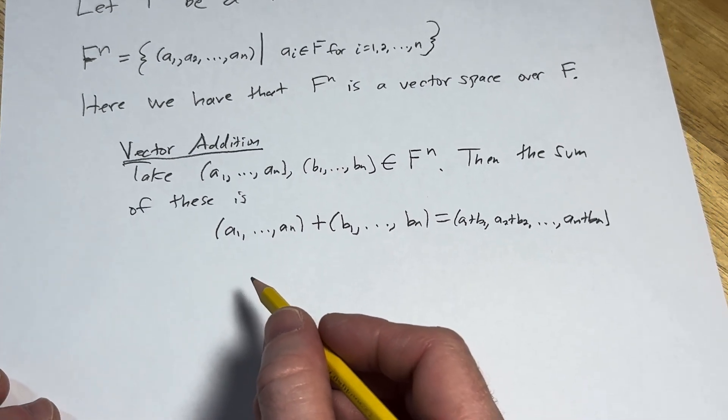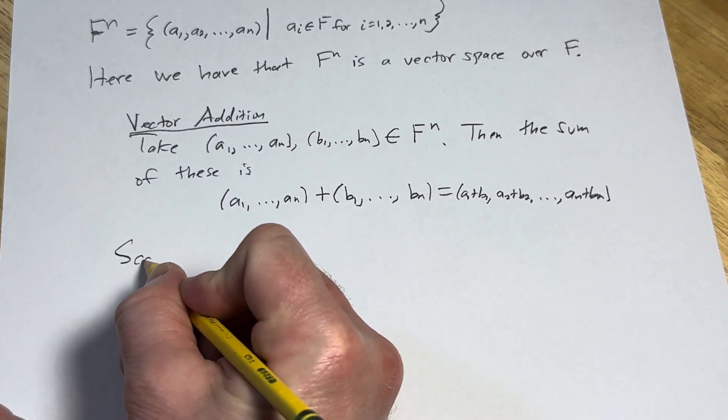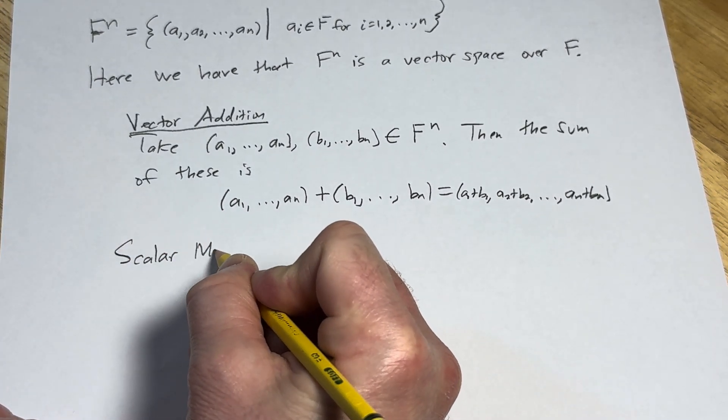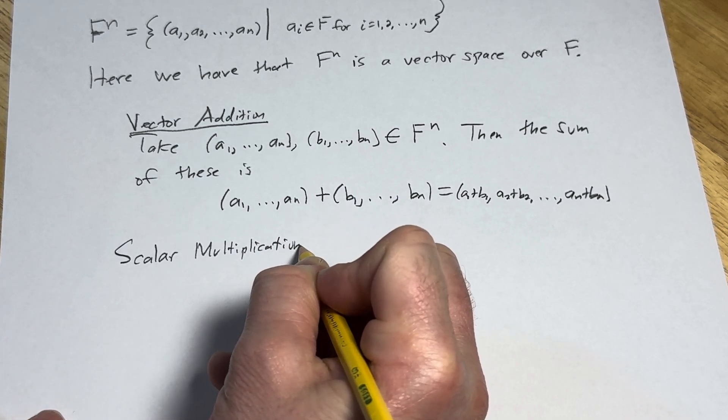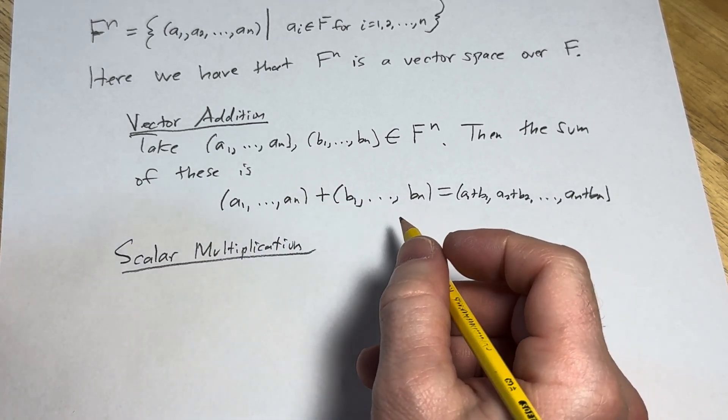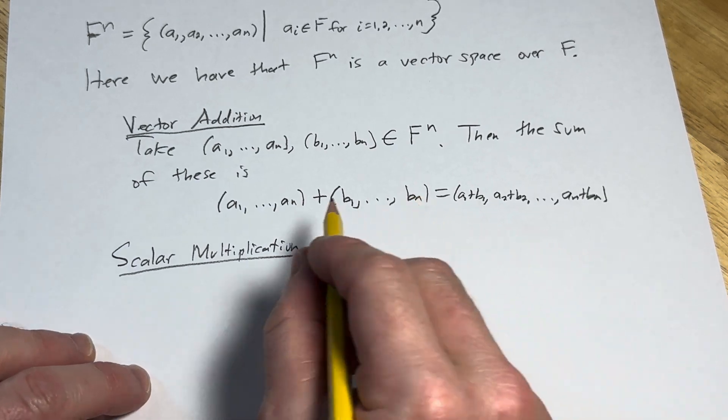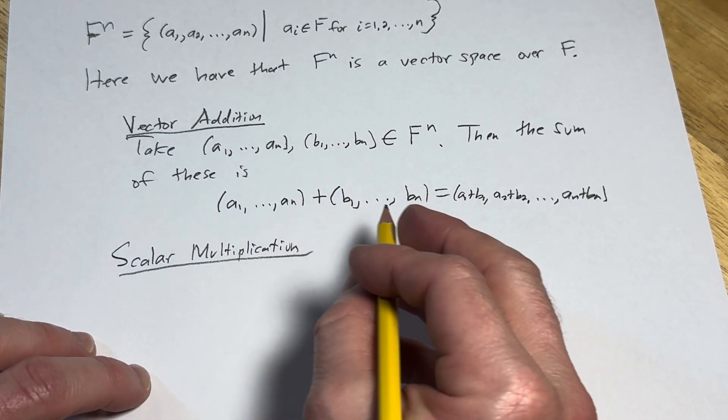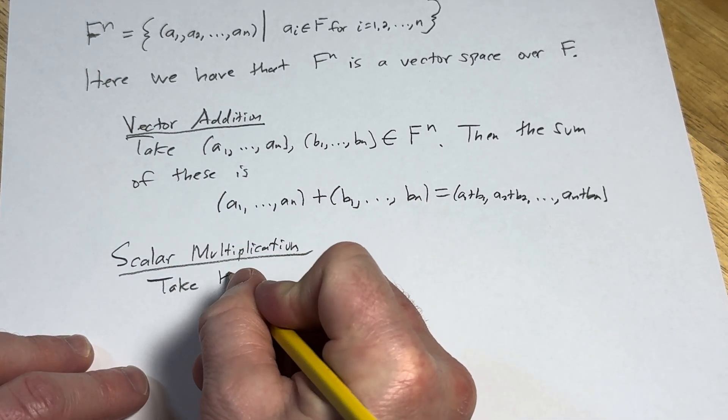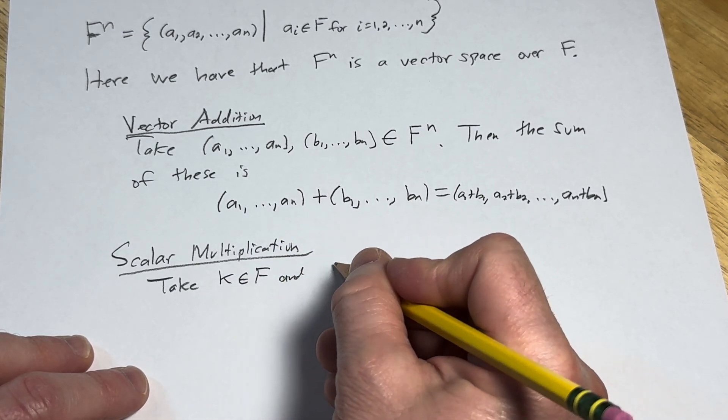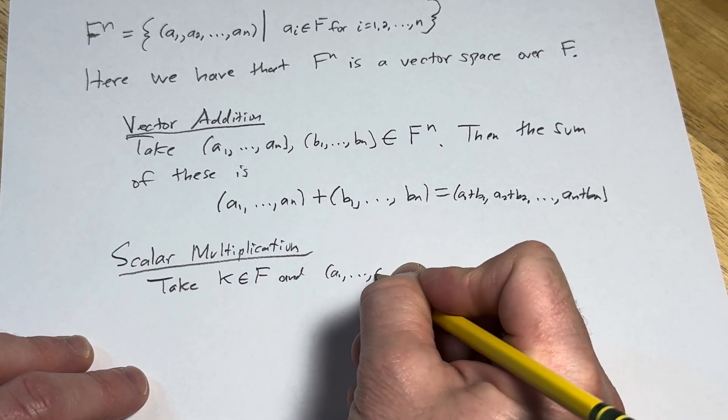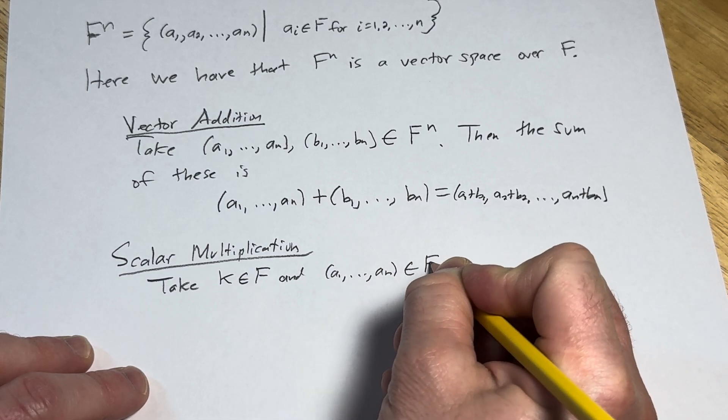Now let's look at the scalar multiplication. And at the end of this video, I'm going to show you a special case. We'll talk about a special case of this vector space, which is really important. So for scalar multiplication, you would take a k, let's say in F. That's a scalar. And a vector, say (a_1,...,a_n) in F^n.